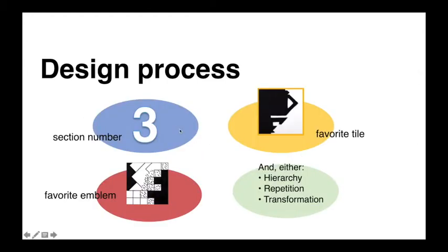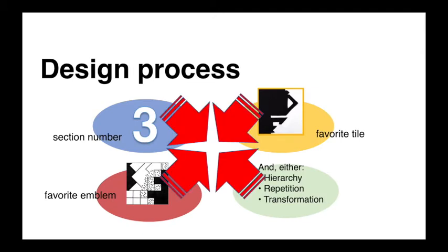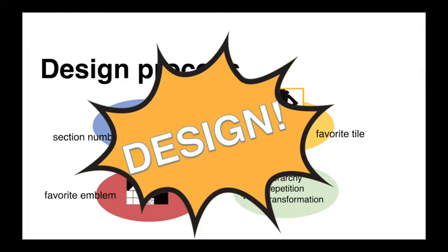You'll take your section number — in my students' case, section three — your favorite emblem, your favorite tile or layout, and then either hierarchy, repetition, or transformation. In some cases instructors will assign this to you; in some cases you may choose. That's up to your section instructor as to whether hierarchy, repetition, or transformation will be the guiding principle for how this shield comes together. So aspects and elements of your emblem, aspects and elements of your favorite tile, integrating your section number in an interesting way, and then bringing it all together under hierarchy, repetition, or transformation — all these things come together to design your shield.